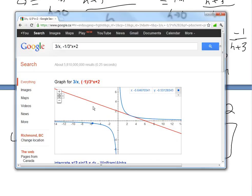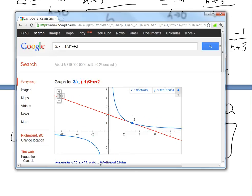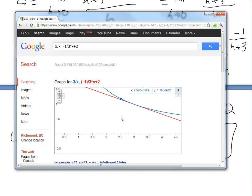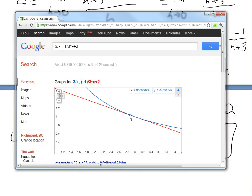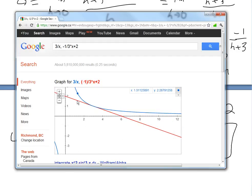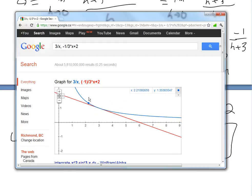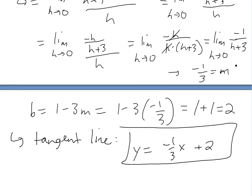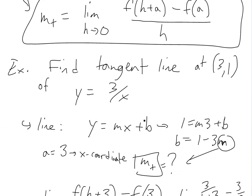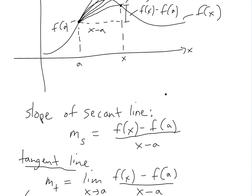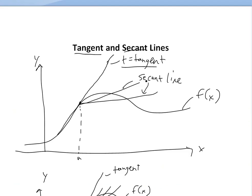If we graph this — 3 over x and negative one-third times x plus 2 — we can see the tangent line. The red line is the curve, and the tangent line touches it perfectly at the point (3, 1). Hopefully you've learned what a tangent line is — it's the same thing as a derivative. A secant line is just any line intersecting the curve at two points. Thanks for watching and stay tuned for another math easy solution.